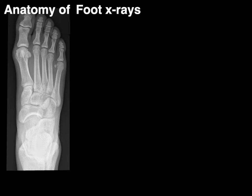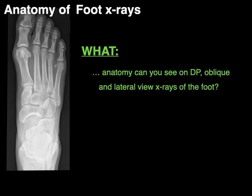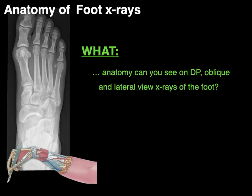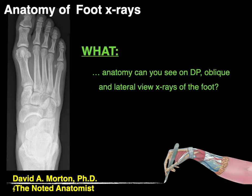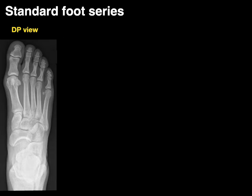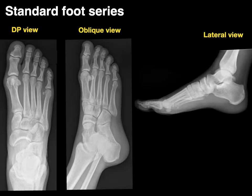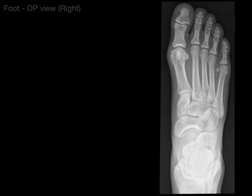We're going to do anatomy of foot x-rays and answer the question: what anatomy can you see on DP, oblique, and lateral view x-rays of the foot? Hello everyone, my name is Dr. Morton and I'm the noted anatomist. The standard foot x-ray series are going to be the DP view, oblique view, and lateral view. We're going to start with the DP view, which means the dorsal plantar view.